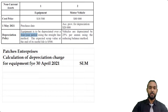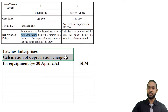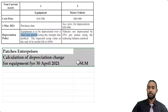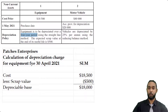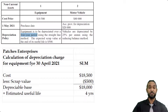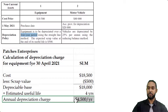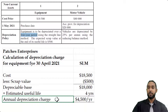Let's take a look at the working. They gave you space on the paper, but because I'm working in Excel I like to do a statement format. So: Patches Enterprises, calculation of depreciation charge for the year ended 30th April 2021, straight-line method. We start with the cost of $18,500, minus the scrap value of $500, giving us $18,000 — the depreciable base. We divide that by the estimated useful life of four years and get an annual depreciation charge of $4,500 per year. Under the straight-line method, the depreciation charge is the same every year over the asset's useful life.